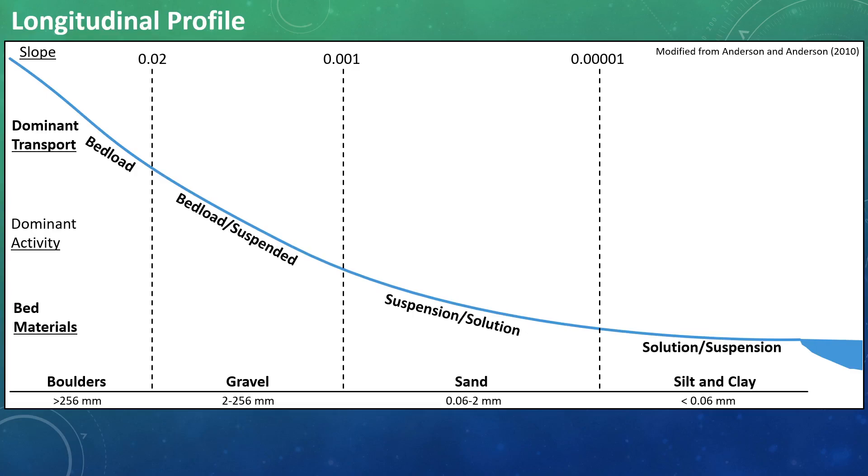Finally, we move into the reach where dissolved load, or those in solution, or suspended loads are dominant. These reaches are dominated by high silt and clay loads, but sands and gravels can still be found.